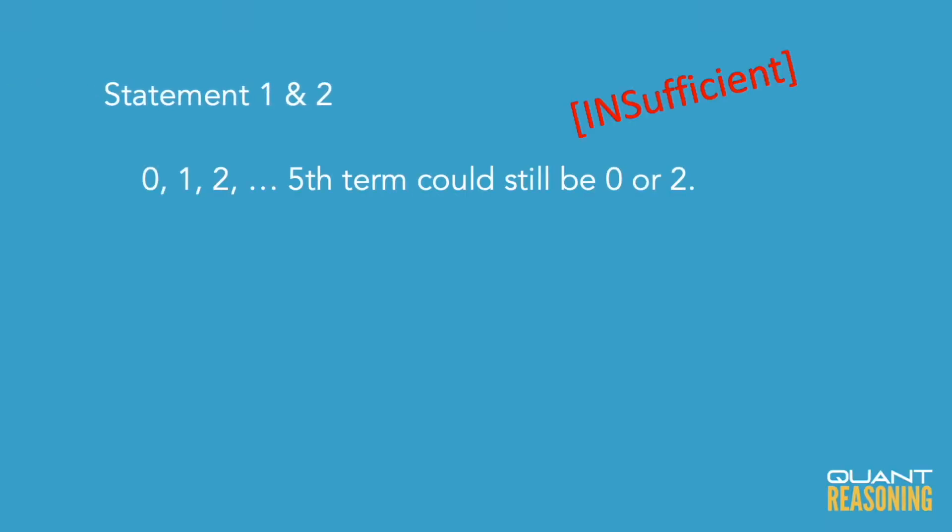So now we're down to just two answer choices: C and E. If we combine these statements, what do we know? We know the sequence starts like this: zero, one, two. And by the way, the first term and the third term really are either zero or two, so that's to be expected — the statements are not allowed to lie, so this makes sense with statement one. But then what's the fifth term? I still can't really say whether it would be zero or two. And that means that the correct answer here is E.